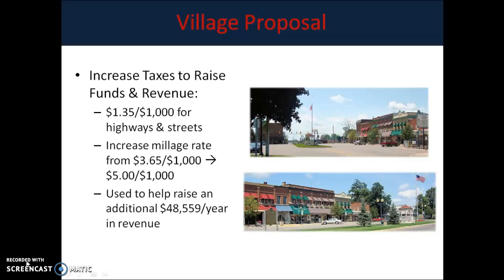The first is a village proposal for Brooklyn. Basically, it's to increase the millage, or taxes, to raise funds and revenue for Brooklyn. They want to create a millage of $1.35 per $1,000 of taxable income for roads, as well as increase the existing millage from $3.65 per $1,000 of taxable income to $5. This is in hopes of raising an additional nearly $50,000 a year in revenue for the village of Brooklyn.